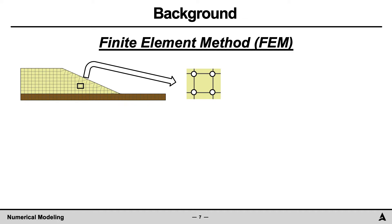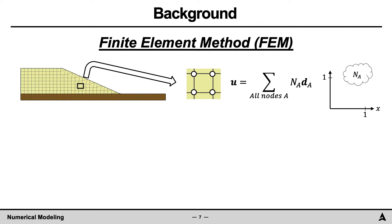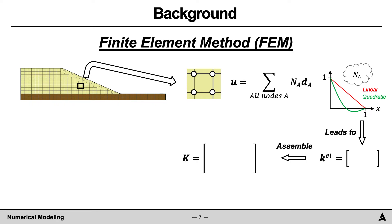In the finite element method, the displacement field for an element is represented by the sum for all nodes A, a multiplication of the shape functions NA times the nodal displacements DA. Such shape functions may vary along the element with a linear function, quadratic function, or others. For each element, a stiffness matrix will be determined. The stiffness matrices are assembled into a global stiffness matrix K. For a general problem in which acceleration and velocity are not zero, the matrix equation becomes the mass matrix M times unknown accelerations, plus the damping matrix C times unknown velocities, plus the stiffness matrix K times the unknown displacements, which equals the known nodal forces F.